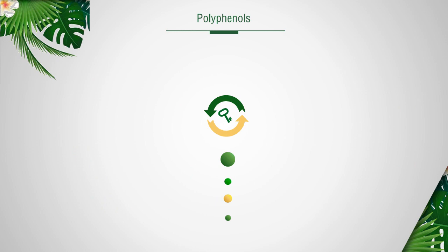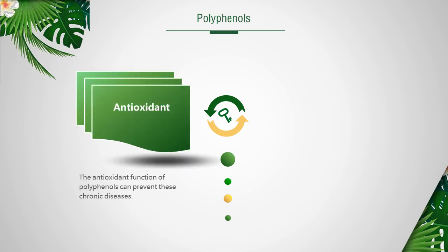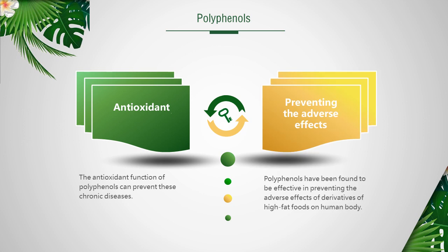Oxidative damage is a major cause of many chronic diseases such as cardiovascular disease, cancer and aging. The antioxidant function of polyphenols can prevent these chronic diseases. In addition to its antioxidant activity, polyphenols have been found to be effective in preventing the adverse effects of derivatives of high-fat foods on the human body.